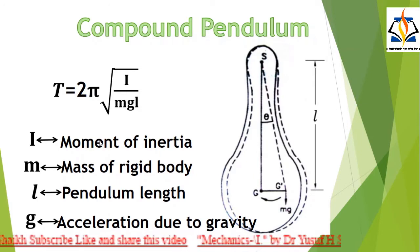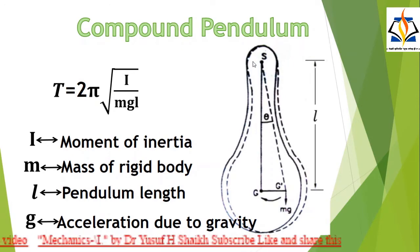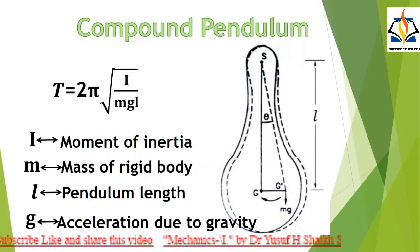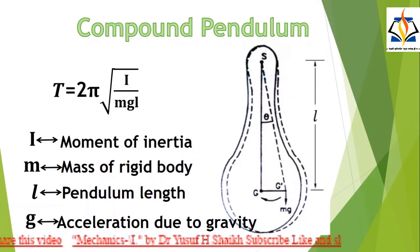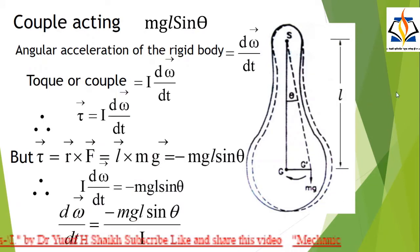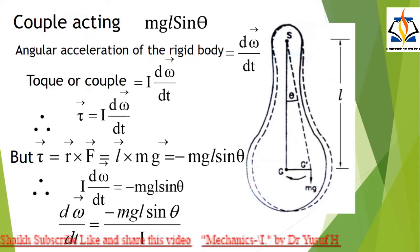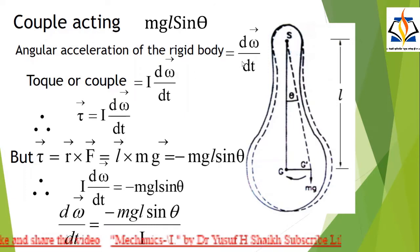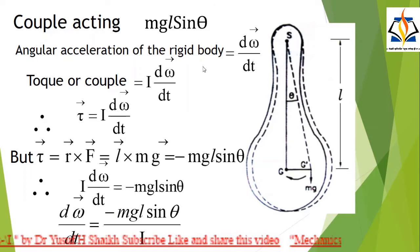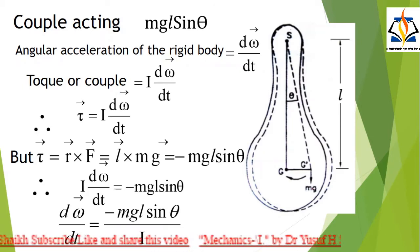L is the distance between the point of suspension and the center of gravity. G is the center of gravity, and g is the acceleration due to gravity. Let S be the point of suspension of the compound pendulum. The center of gravity of a rigid body lies vertically below the point of suspension in the equilibrium position. Let θ be the angle between the rest and deflected positions. The couple acting on the rigid body is equal to MgL sinθ. Due to this couple, the angular momentum changes, and dω/dt is the angular acceleration of the rigid body.